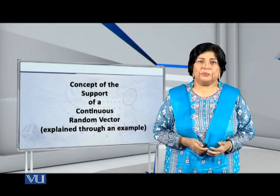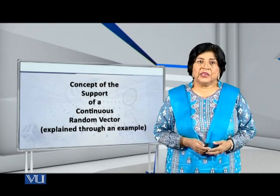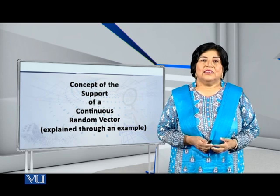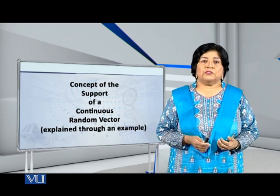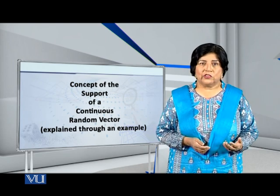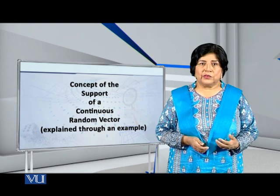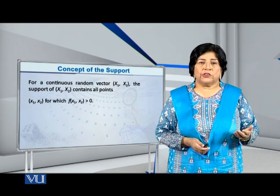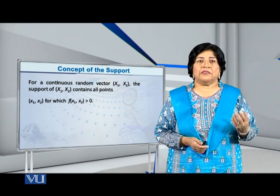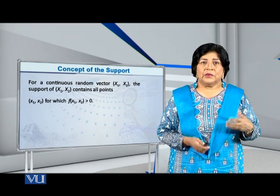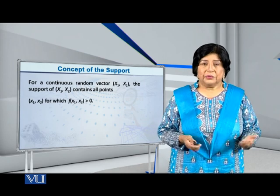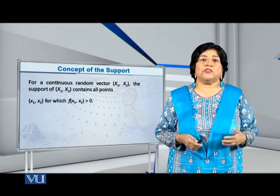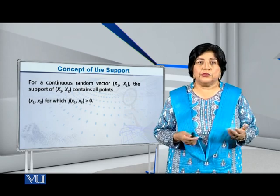Dear students, let me present to you an example to explain the concept of the support of a continuous random vector. Let us take the situation when we have two random variables x1 and x2, each of which is of the continuous type.